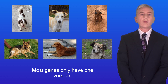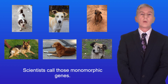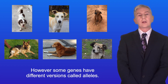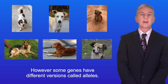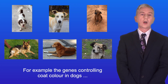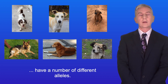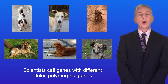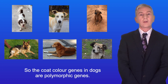Most genes only have one version and scientists call those monomorphic genes. However, some genes have different versions called alleles. For example, the genes controlling coat colour in dogs have a number of different alleles. Scientists call genes with different alleles polymorphic genes, so the coat colour genes in dogs are polymorphic genes.